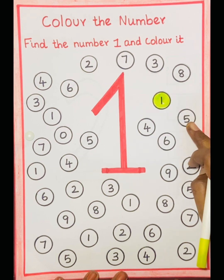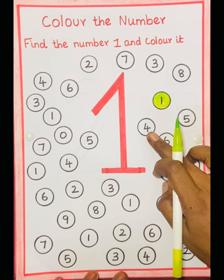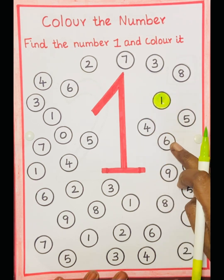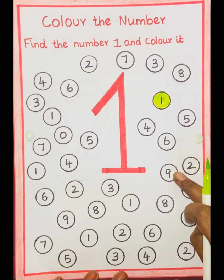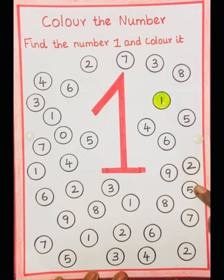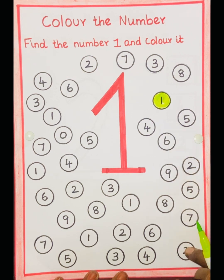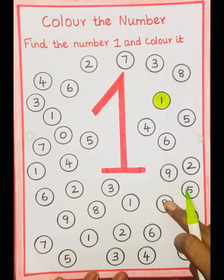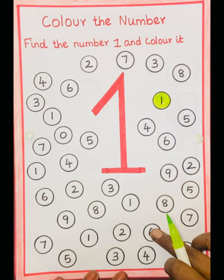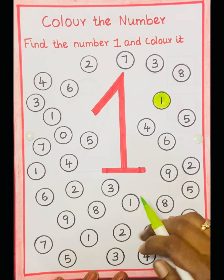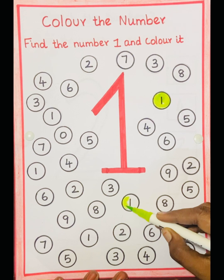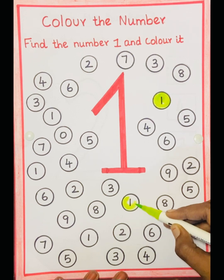Next one: 5, 4, 6, 2, 9, 5, 7, 2, 8, 6, 4, 1. So we have to color the number 1.